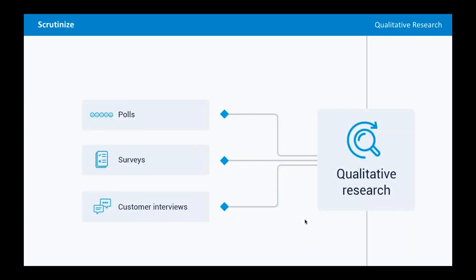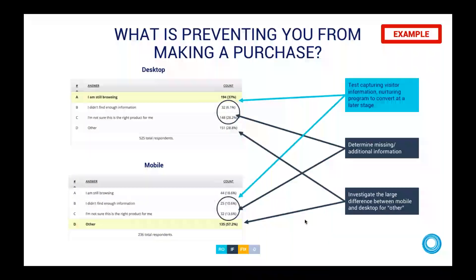Step three: qualitative research — which just means talk to your customers. Ask them: What are you trying to accomplish? Why did you come to our website today? What are the motivators? What's stopping you from converting? What can we do better? The best information will come from your customers. With some websites, even 10 people answering an online poll can help you understand the issues. It's not enough to just collect data — you need to figure out what to do next. It's a journey of discovery.